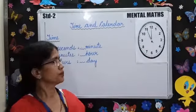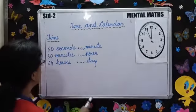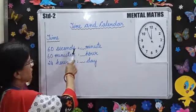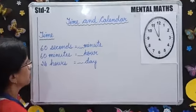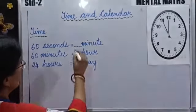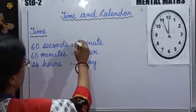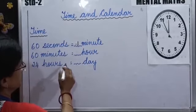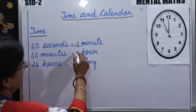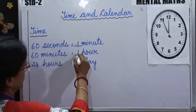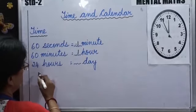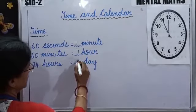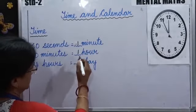60 seconds make one minute. 60 minutes make an hour. And 24 hours make a day.